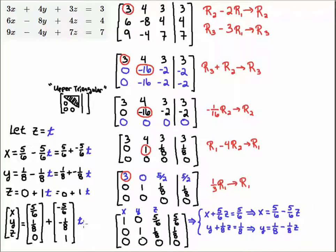Now the reason that we call t a free parameter is because we are free to let it equal any value we want. So for example, if t were 0, then your solution would be [5/6, 1/8, 0].